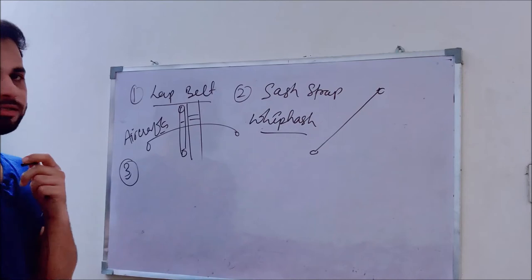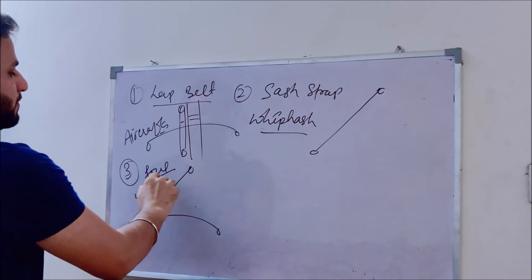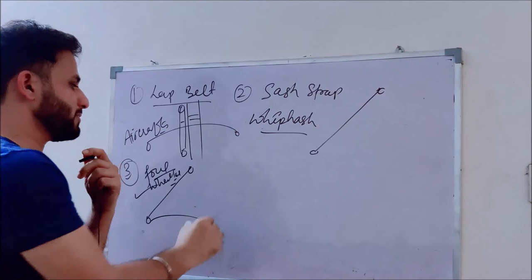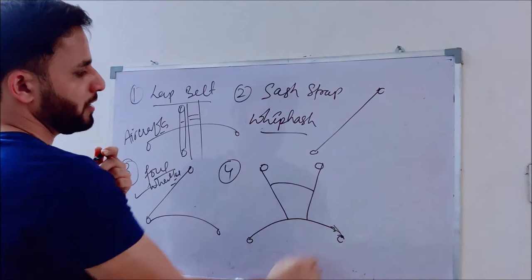The third type is the three-point friction belt, which is fixed at three points. This type of belt is commonly seen in various four-wheelers, which are inbuilt with these kinds of three-point friction belts.